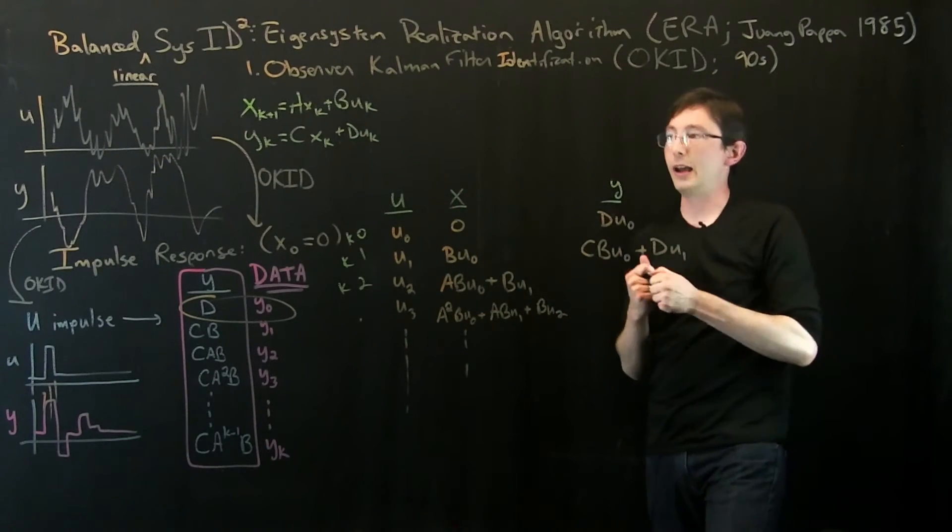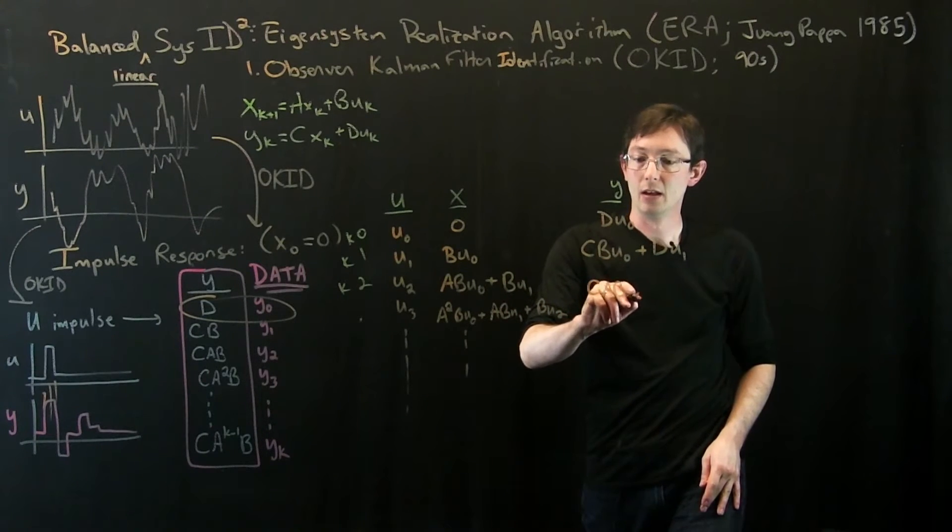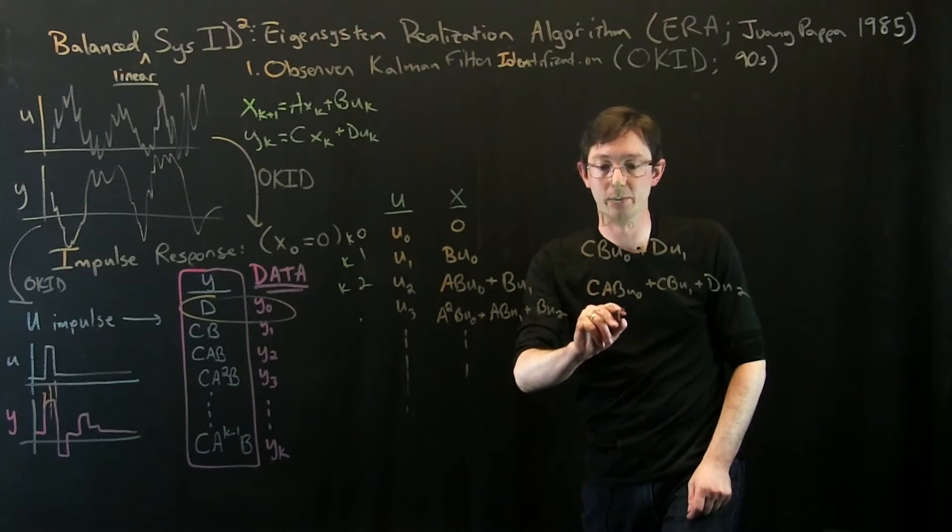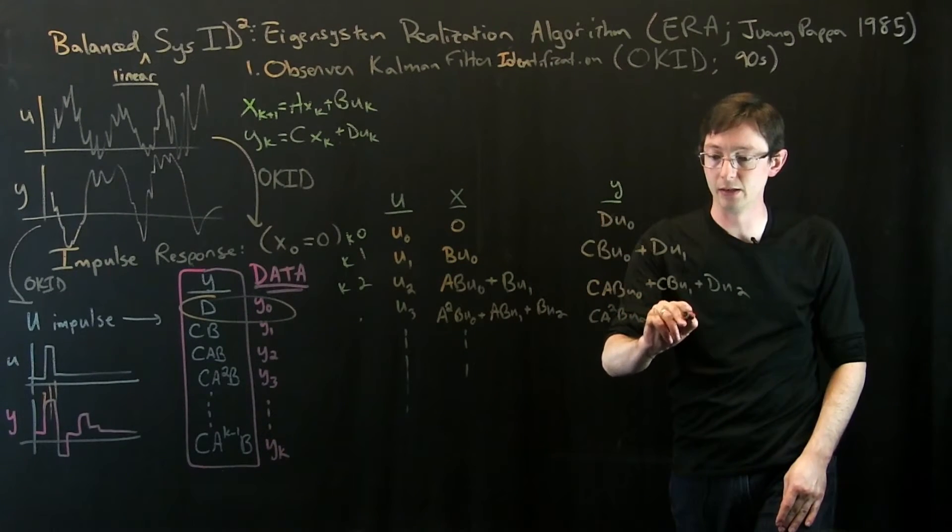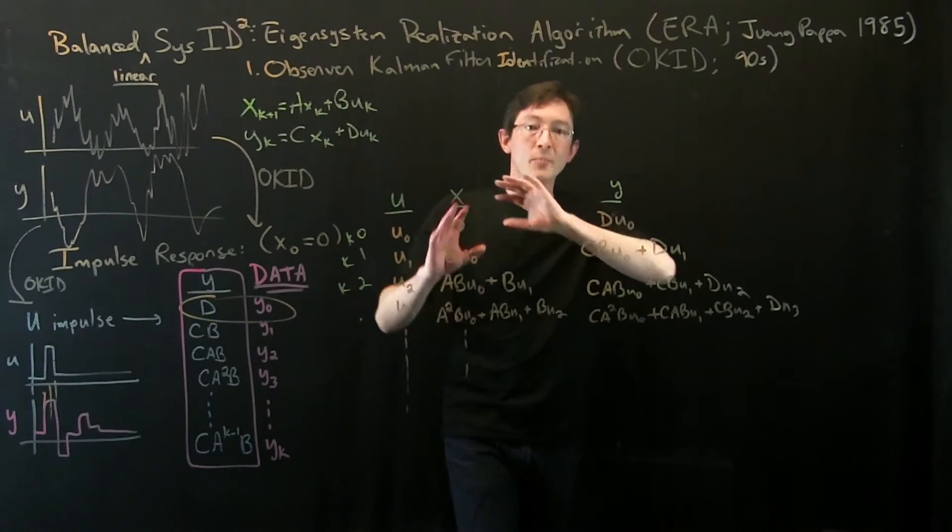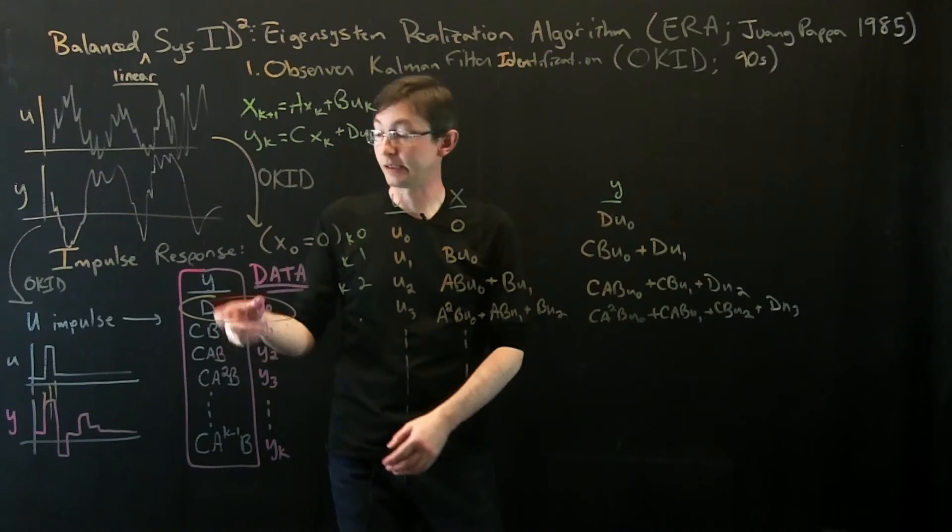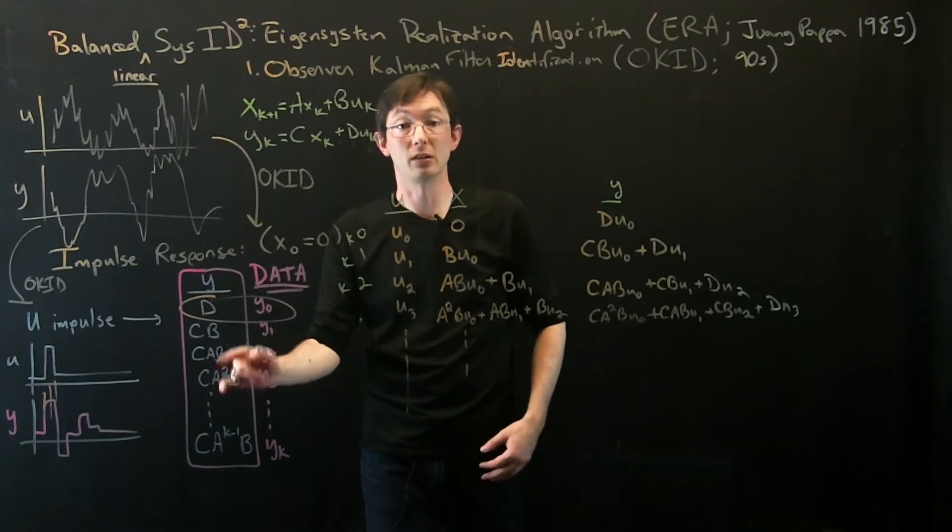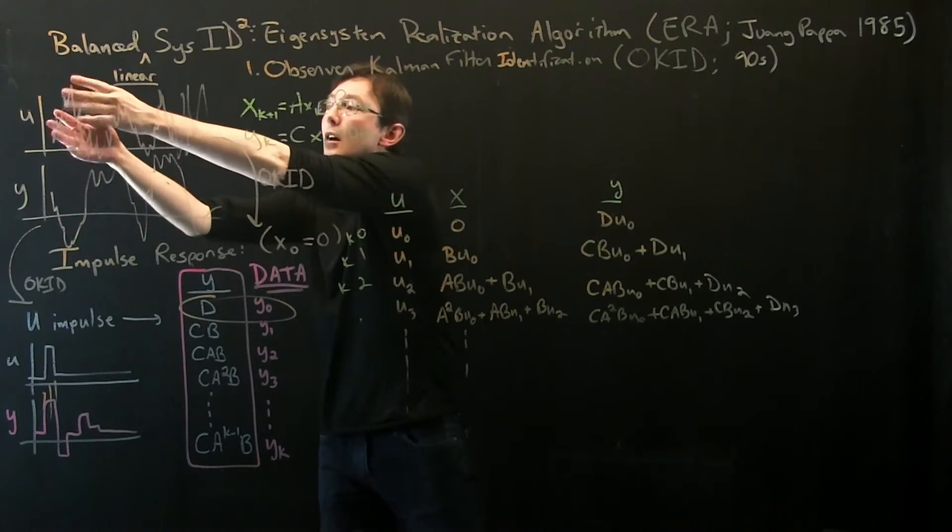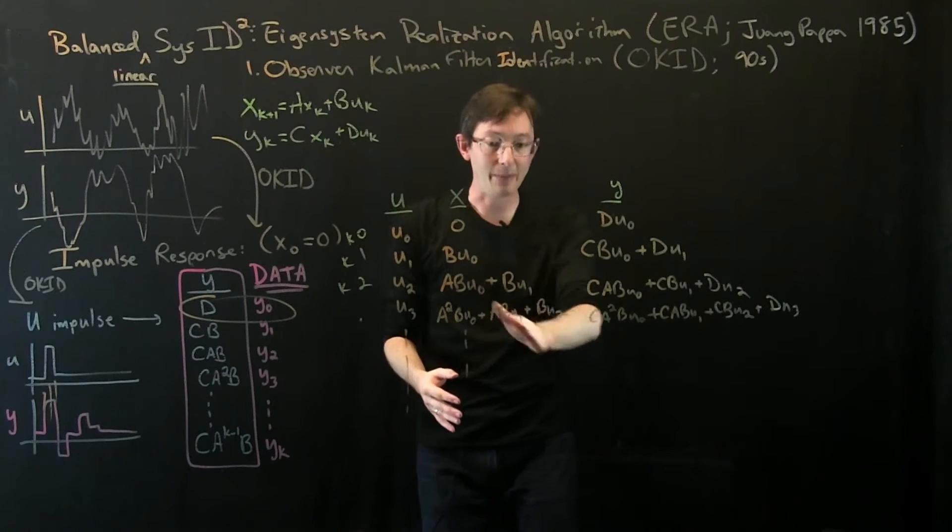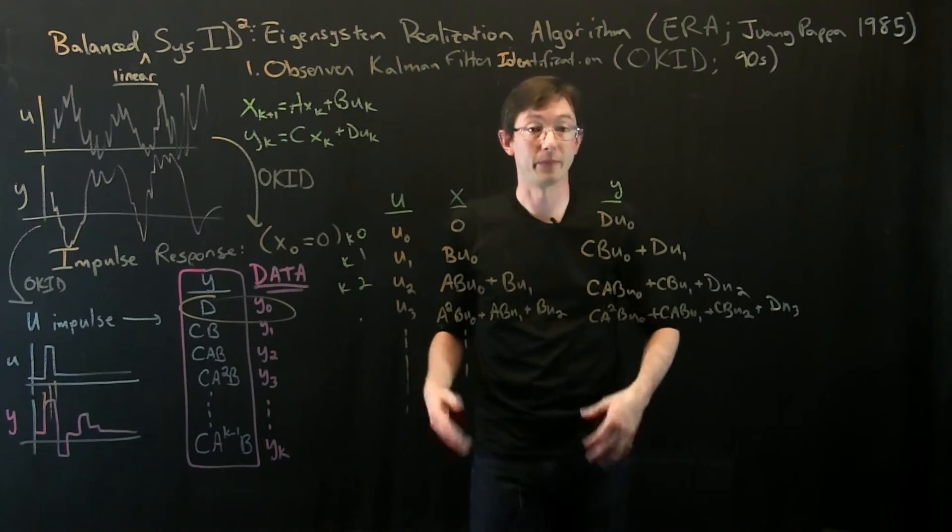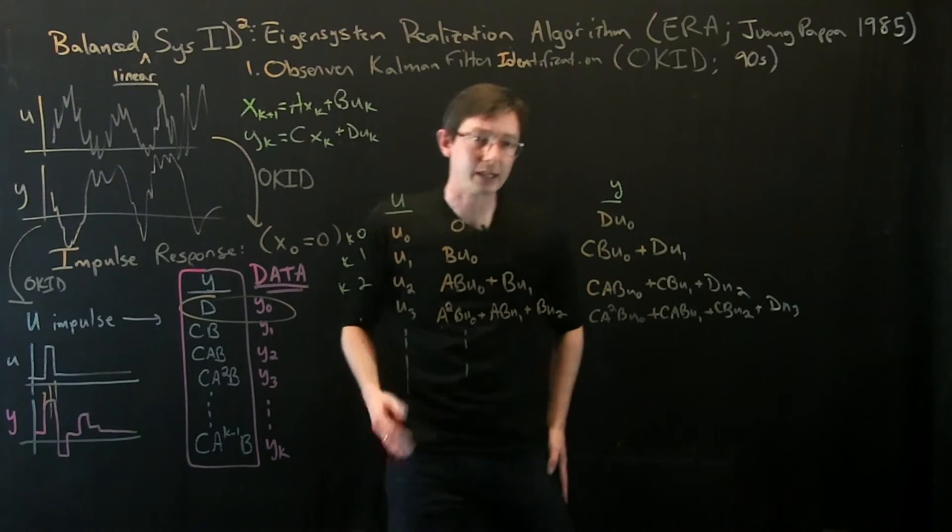So every time step I pick up another term because I have another little delta u kicking the system. This thing is being constantly forced so this is getting worse and worse. And then the y's are also getting nastier and nastier. So now I have C A B u_0 plus C B u_1 plus D u_2 and so on and so forth. C A^2 B u_0 you can kind of get the pattern here, plus C A B u_1 plus C B u_2 plus D u_3. So the long story short is that now the impulse response was really convenient because the output y was simple, there was only one term per time step. Whereas here, because I'm constantly forcing the system, I'm getting the convolution of all of these little forcings and it's building up.